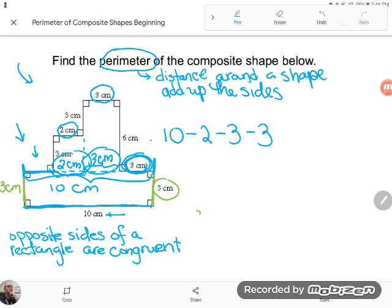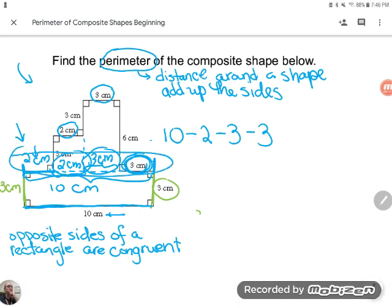So 10 minus 2 minus 3 minus 2. Oops, I just wrote it wrong. I know I wrote it right, but I put it in my calculator wrong. Let me try it again. 10 minus 2 minus 3 minus 3 is just 2. So this remaining piece here must be two centimeters. Now again, let me show you why that works. This whole length should add up to 10, and 2 plus 2 is 4, 5, 6, 7, 8, 9, 10. It's a total of 10 centimeters going across.